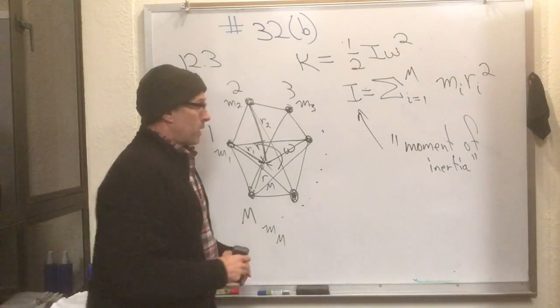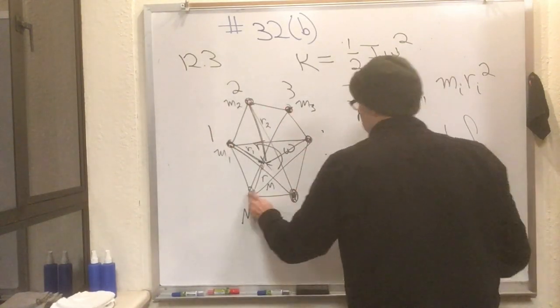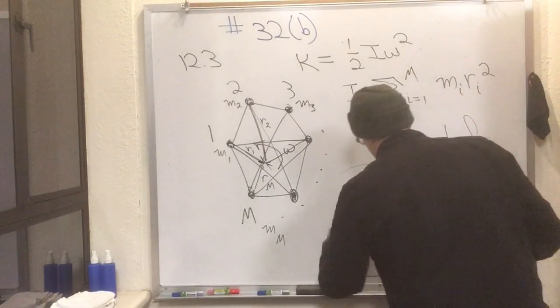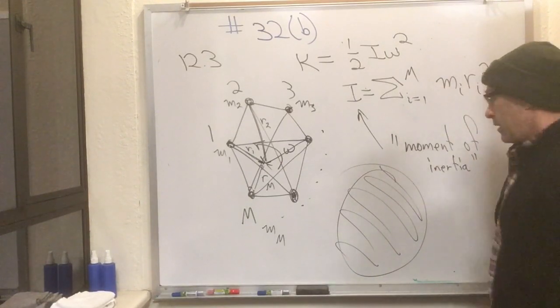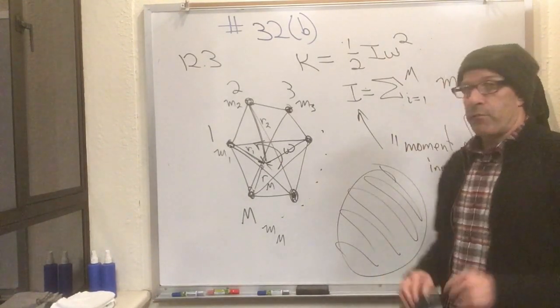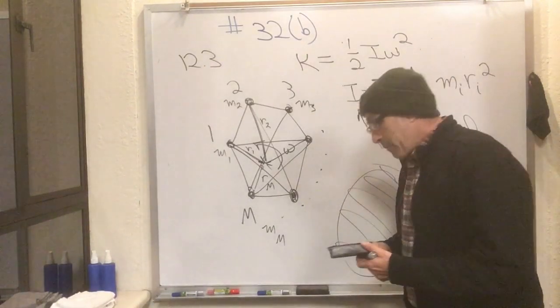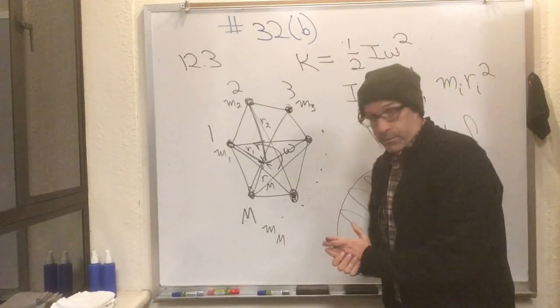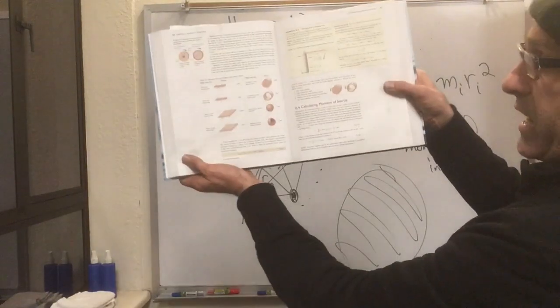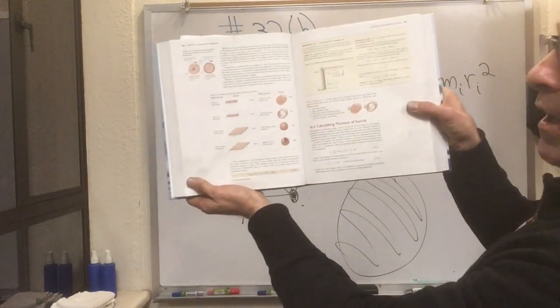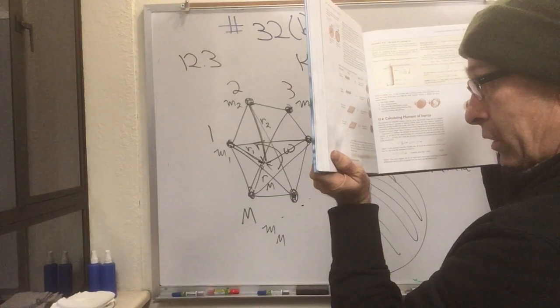Now if you go to Knight 12.4, he shows you how to calculate the I for things that are not just a bunch of point particles. He shows you how to calculate the I for things like a disk. And the way you do it is you chop it up into bits and then you take the limit that the number of bits goes to infinity. This gives you an integral and it gives you expressions for I. But you're not going to have to do that in this class because this class has calculus as a co-requisite, not a prerequisite.